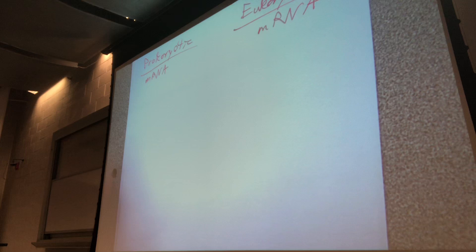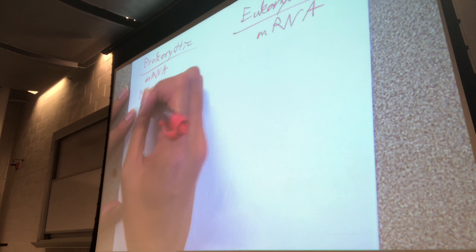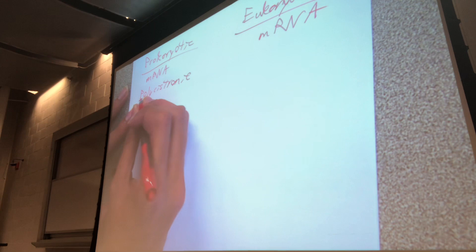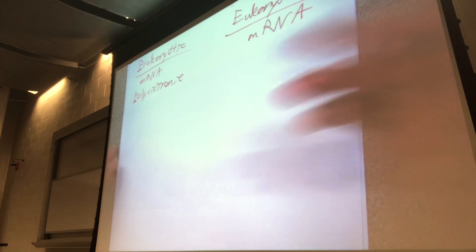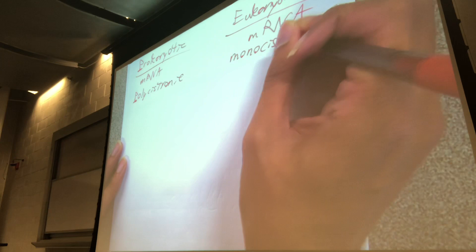For prokaryotic mRNA they use the phrase polycistronic. I remember that polycistronic represents prokaryotic because they both start with the letter P. Eukaryotic is the other word — monocistronic. These are the two types of mRNA: polycistronic and monocistronic. Here is what they mean.